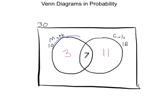Once you know this entire circle is 10 and this section of it is 7, we know this part has to be 3, and this part over here has to be 11. You can then add these things up: 11 plus 7 is 18, plus 3 more is 21. We knew the entire thing was 30, so that means we can put 9 out here. At this point, you can start answering questions.